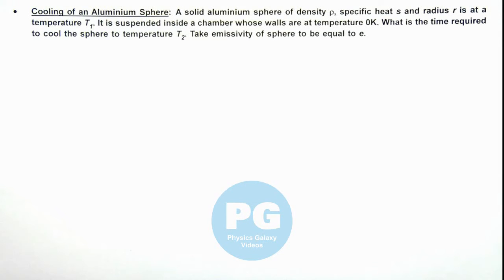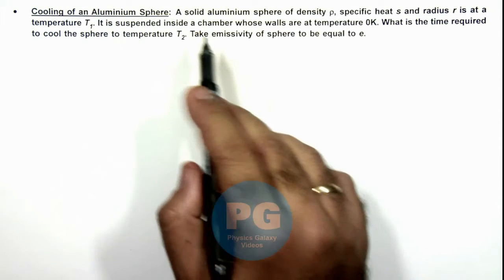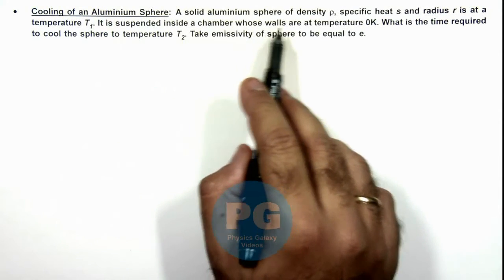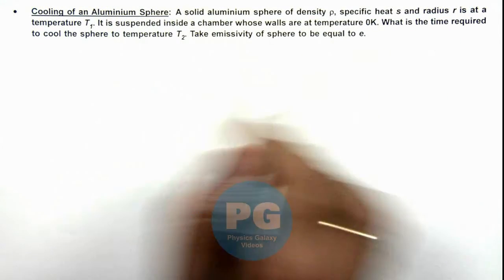In this illustration we'll discuss cooling of an aluminum sphere. We are given that a solid aluminum sphere of density ρ, specific heat s, and radius r, is at a temperature T1.